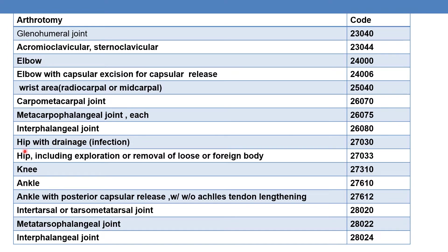For arthrotomy of the hip with drainage, report 27030. For arthrotomy of the hip including exploration or removal of a loose or foreign body, report 27033. In the case of the hip joint, there are two separate CPTs — one for drainage and one for exploration and removal.